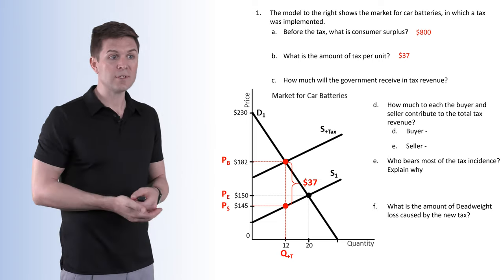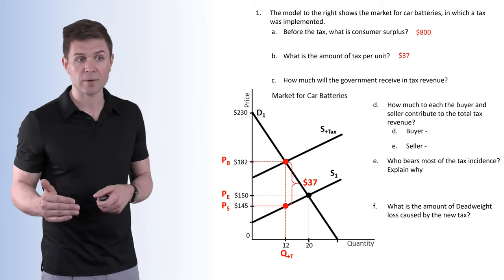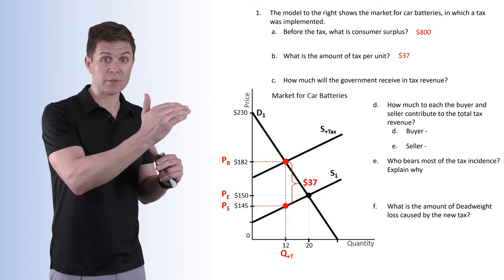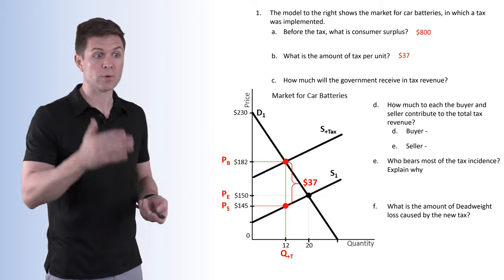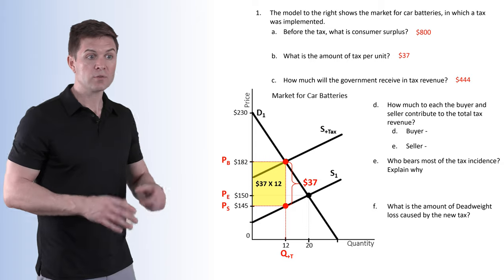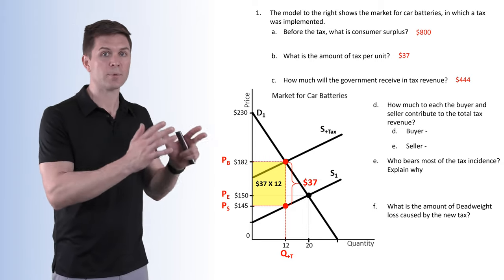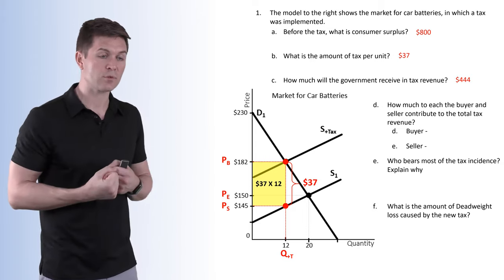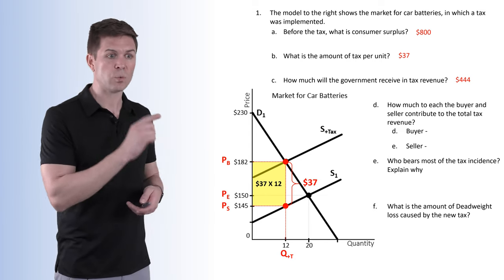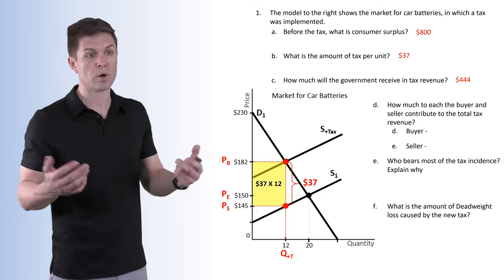Moving forward: how much will the government receive in tax revenue? This is going to be the size of the per-unit tax times the quantity in the market. The market quantity with the tax is 12 units. That yellow rectangle represents the revenue the government is going to receive — $37 per unit times 12 units sold gives us $444.